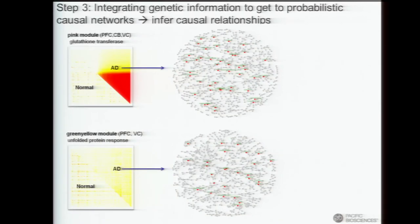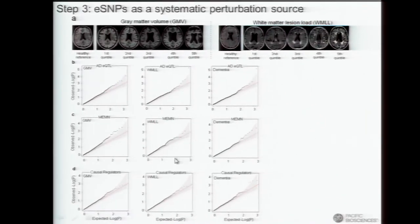Now we want to layer in the DNA variation information to go away from interaction-based networks and into probabilistic causal networks. We're going to take ourselves out of association-based networks and into probabilistic causal networks by layering in SNP-based information as the perturbation source. From that, we get these networks with directed edges so we can start understanding what statistically looks like it's causing other nodes to change, given changes in a given node.